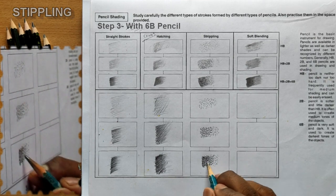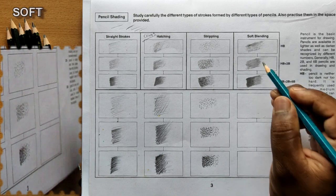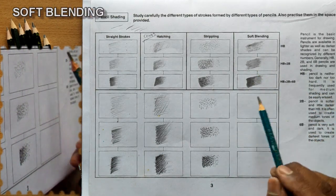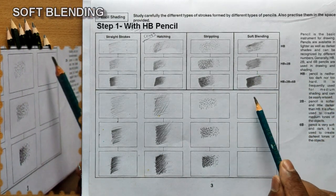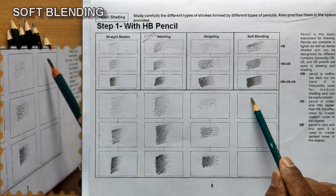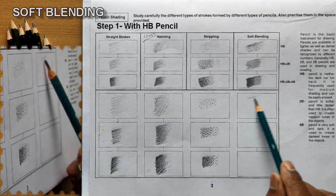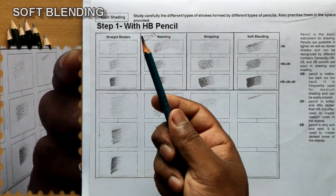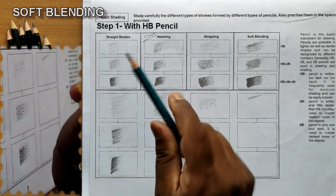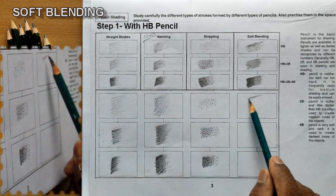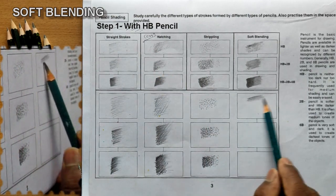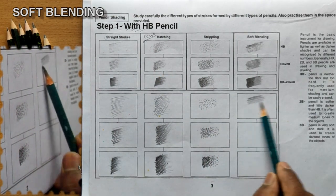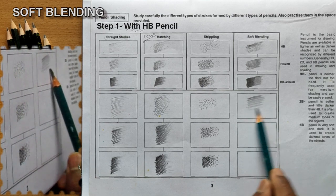The next method is soft blending. For soft blending, you hold your pencil at a low angle using the under-palm method. Hold the pencil down low and shade in a left-right direction lightly with an HB pencil.